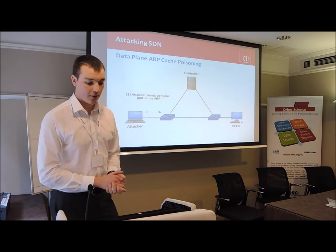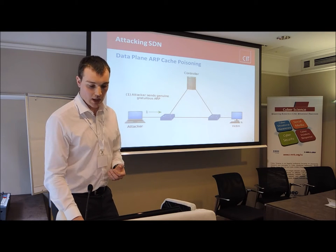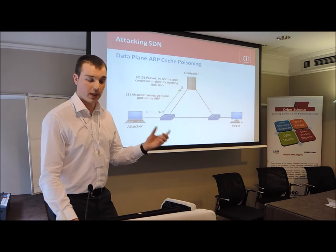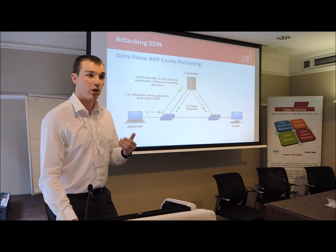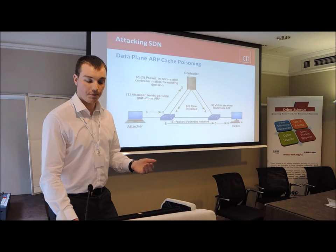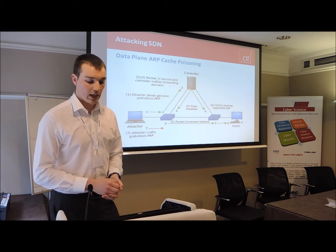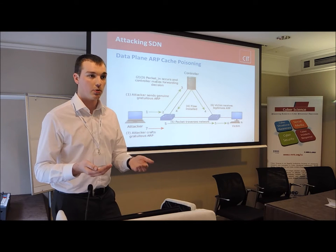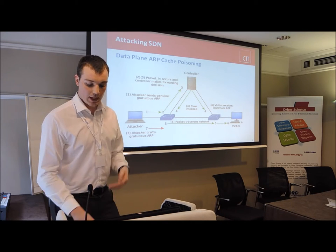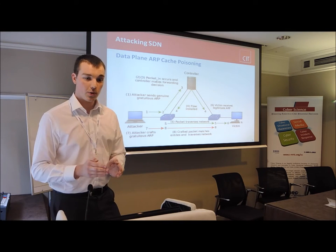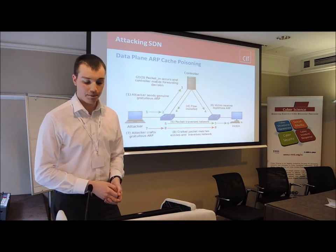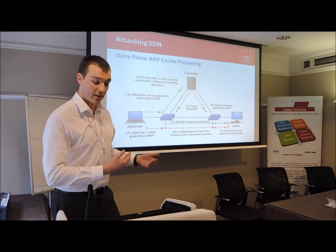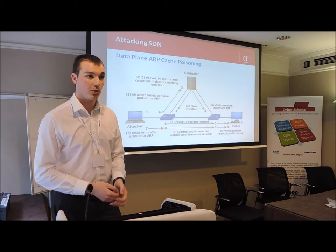The attacker sends a genuine gratuitous ARP reply to the victim. The packet reaches the forwarding device, which forwards it to the controller since there's no existing flow. The controller installs a flow in the network allowing the packet to reach the target. The attacker then crafts a second gratuitous ARP reply, modifying the source IP and source hardware address in the ARP header — the same way as generic ARP cache poisoning. This second packet is able to piggyback on the flow put in place for the original ARP reply, reaching the victim and poisoning its ARP cache. The malicious second gratuitous ARP never actually reaches the controller because of the piggybacking.